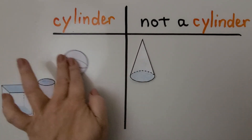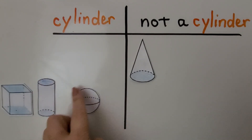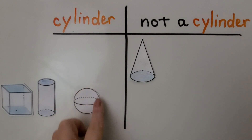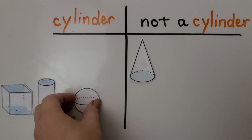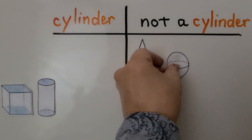What about this one? Is this a cylinder? There are no flat surfaces. It has a curved surface, but there are no flat surfaces. This is a sphere. That's not a cylinder.